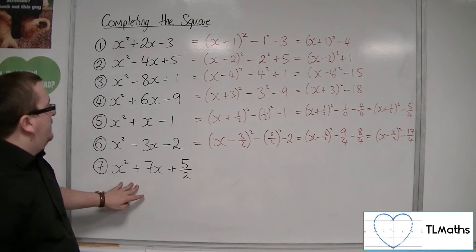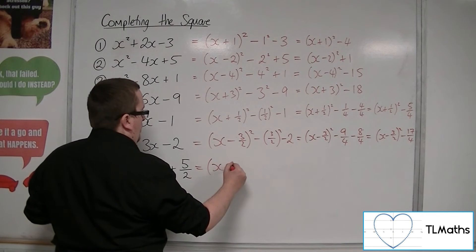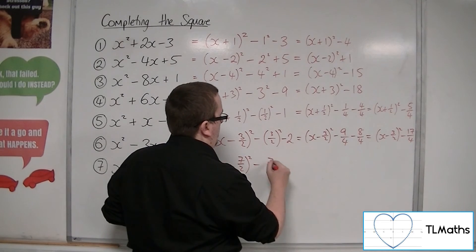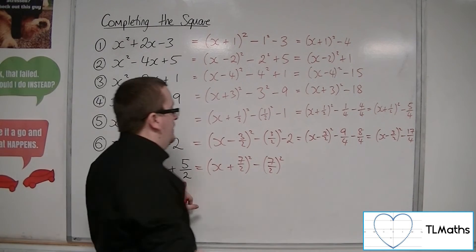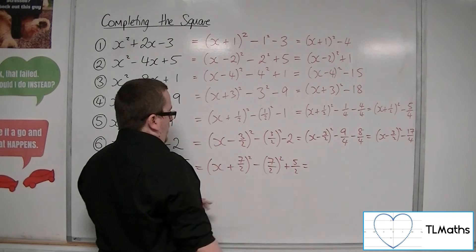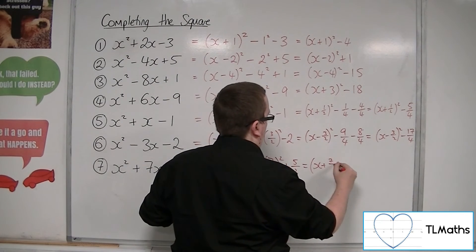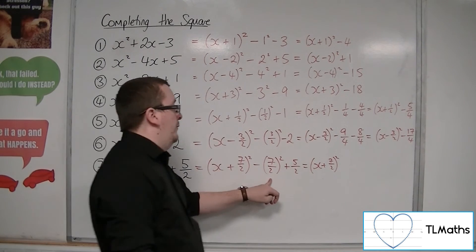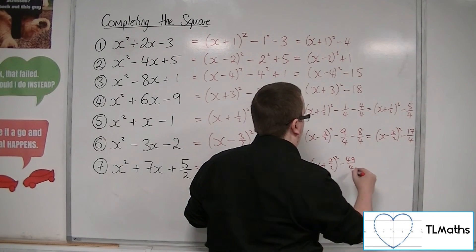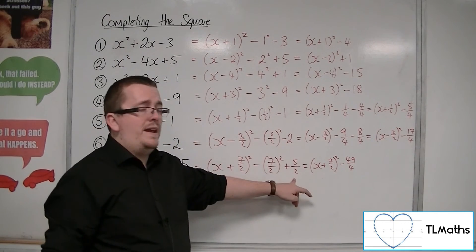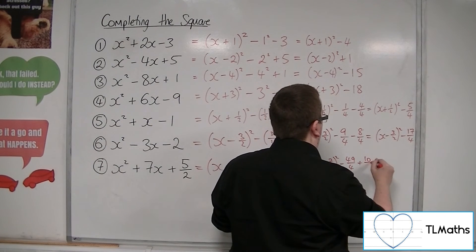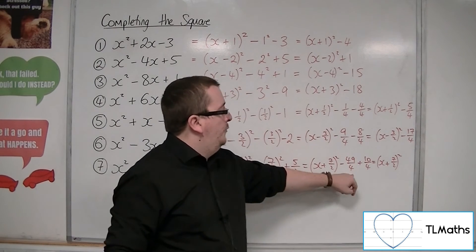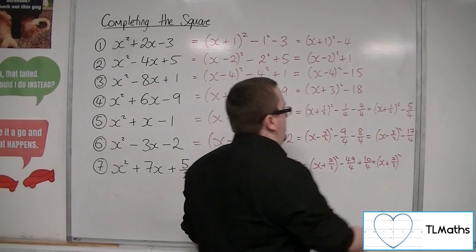Finally, number 7: we're going to have x plus half of 7, so 7 halves, squared, and take away 7 halves squared. We've got an added 5 halves on the end. So we have x plus 7 halves squared. Minus 7 halves squared means squaring the top and bottom: minus 49 quarters. Writing 5 halves in quarters gives 10 quarters. So minus 49 quarters plus 10 quarters gives us x plus 7 halves squared, minus 39 quarters.